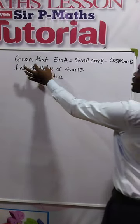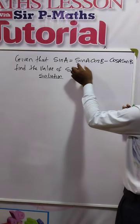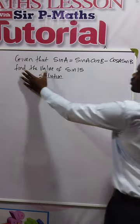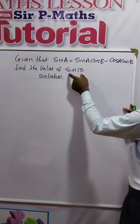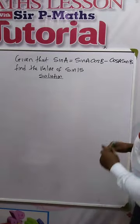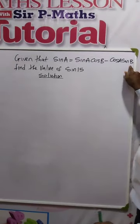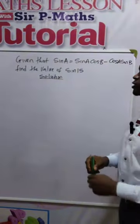Given that sin A is equal to sin A cos B minus cos A sin B, we are asked to evaluate or find the value of sin 15. So we are going to expand sin 15 using this identity so that we can simplify it.